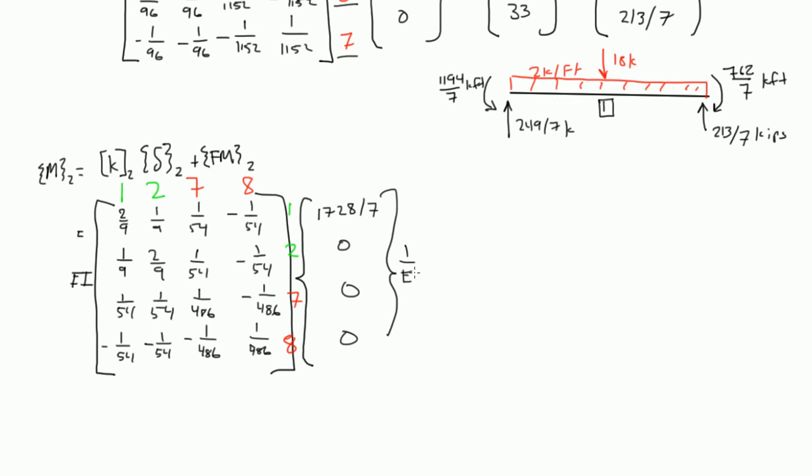Alright, this is 1 over EI. And then to that we add FM2, and FM2 was 54, negative 54, 18, and 18.